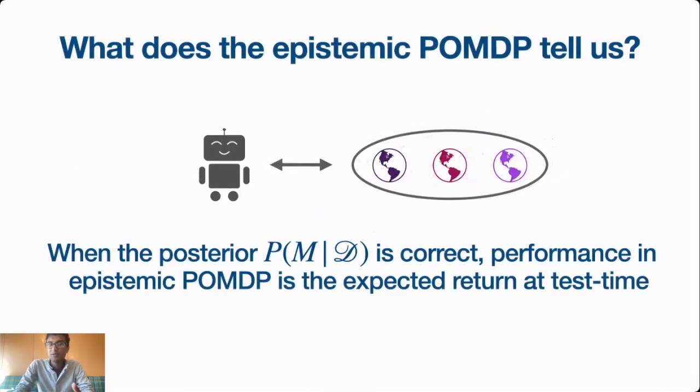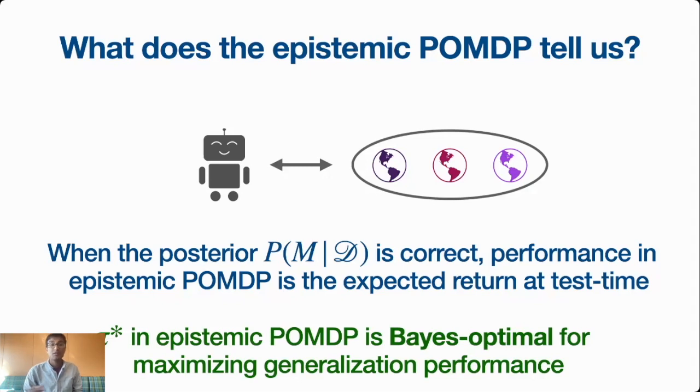Why are we talking about the epistemic POMDP? It turns out that there's a very tight link when the Bayesian interpretation is correct between performance in the epistemic POMDP and the return that we expect to get at test time. When our policy does well in the epistemic POMDP, we expect it to get high return at test time, and when the policy does poorly in the epistemic POMDP, we expect that it should get low expected return. Taking this logic to the extreme, the optimal policy for generalizing, the Bayes optimal policy for maximizing generalization performance, actually corresponds to acting optimally in this partially observed MDP.